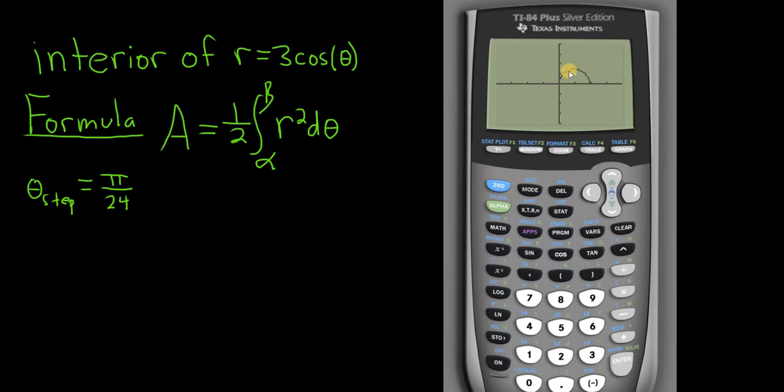Okay, so if we do pi over 2, we get half of the circle. All right, let's go back to the window. Let's change it to pi. Hit graph. Oh, look, pi gives us the whole circle. So we're going from 0, I just hit trace to see the 0, from 0 to pi.